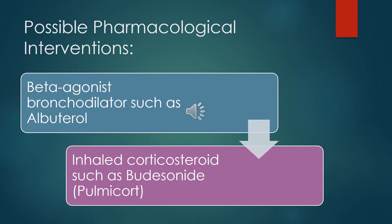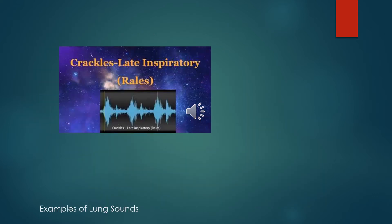What are the possible pharmacological interventions? Fast-acting beta agonist bronchodilators will be used, such as albuterol. You may also see a corticosteroid used, such as budesonide, also known as Pulmicort. Now let's go to a YouTube video that gives us a good representation of healthy and unhealthy lung sounds, including wheezing, which goes along with our asthma exacerbation.